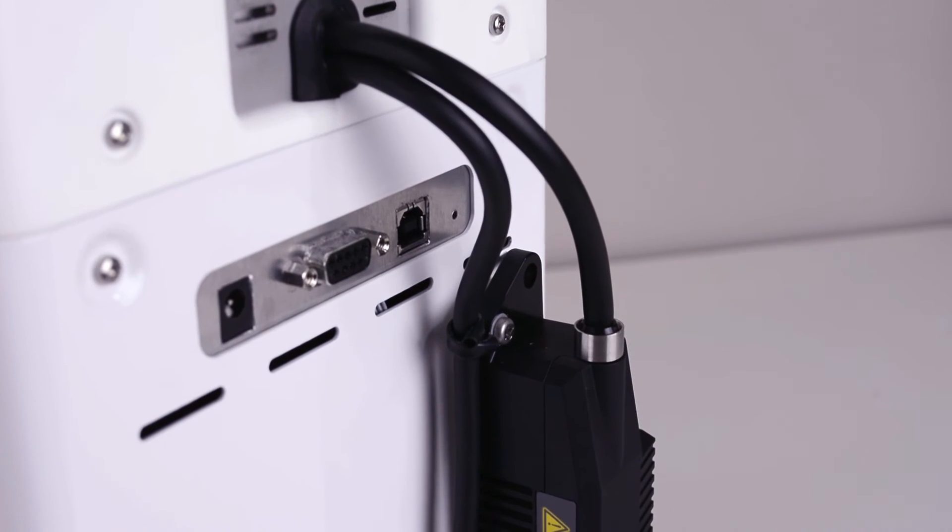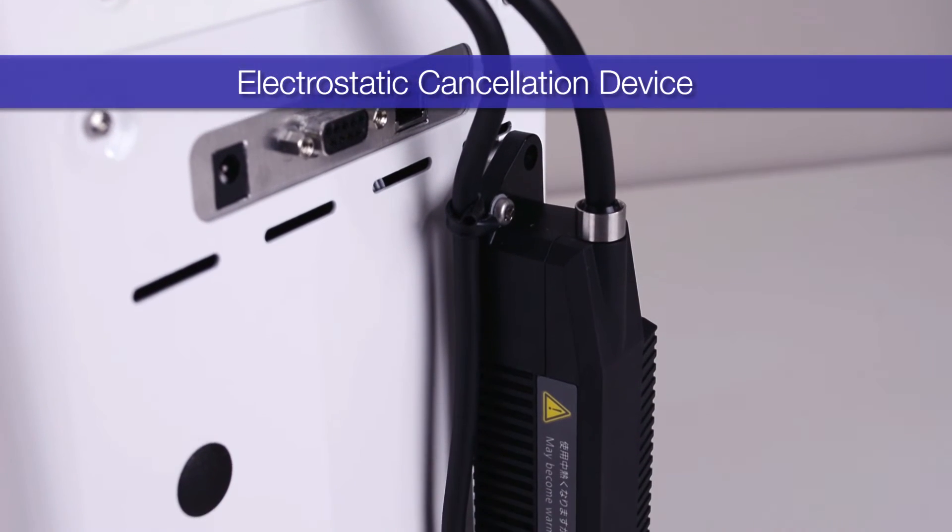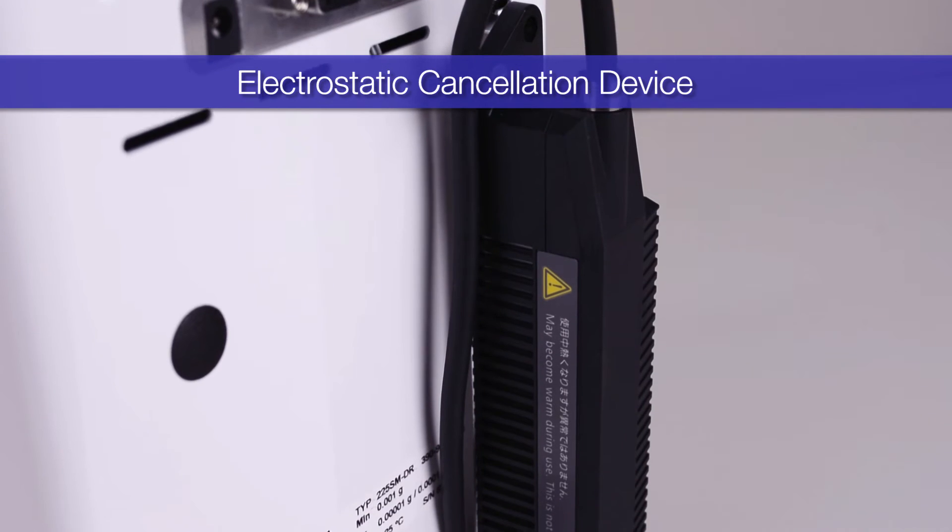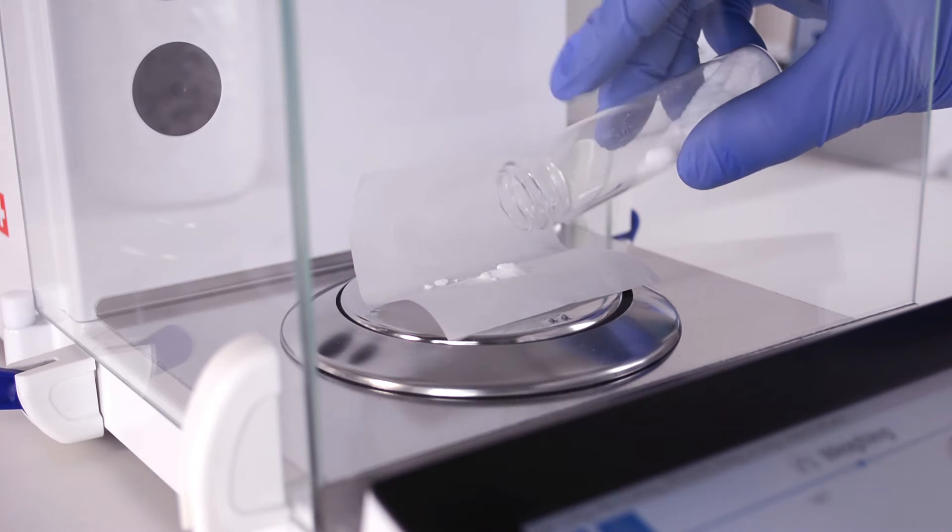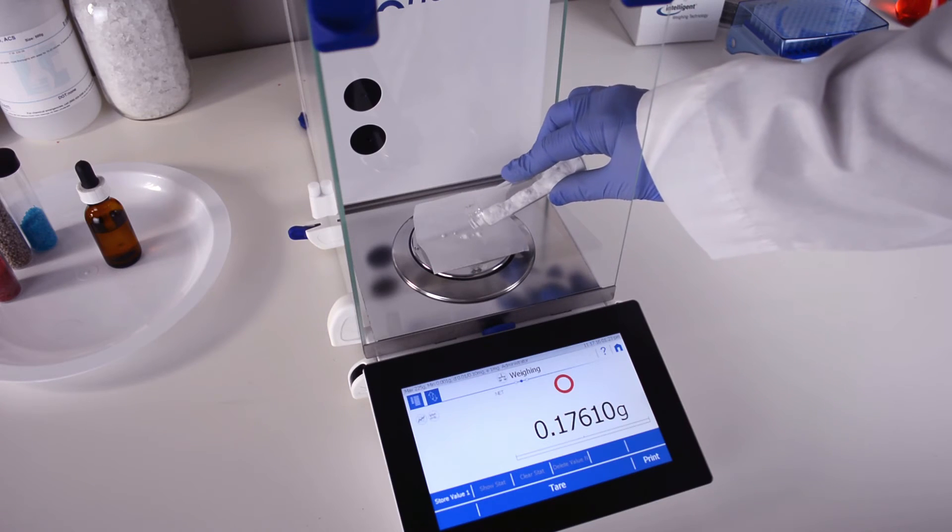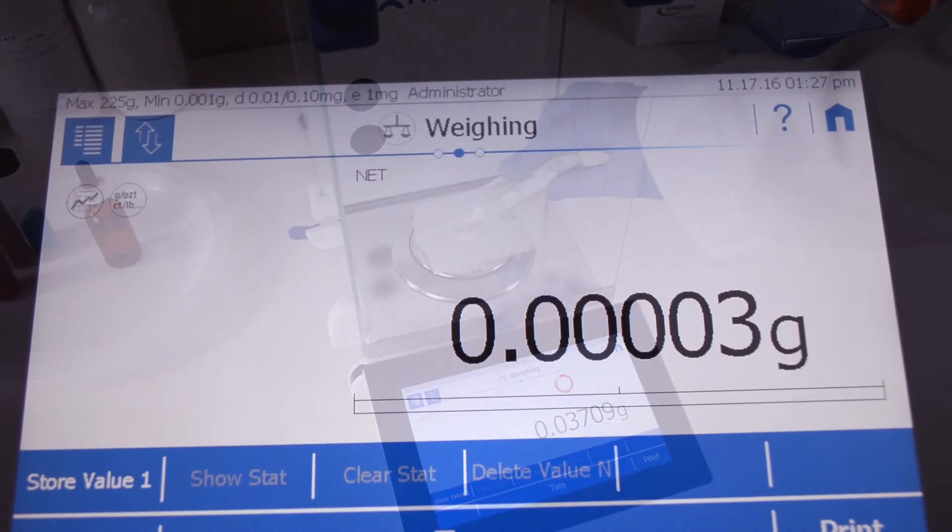As an option, an electrostatic cancellation device can be installed onto the balance, removing static electricity buildup from the weighing chamber which can cause inaccuracies in weighing and can make powder samples difficult to handle. The balance will notify you when the electrostatic cancellation device is operating.